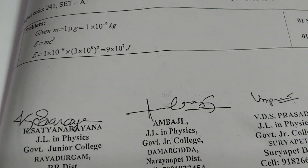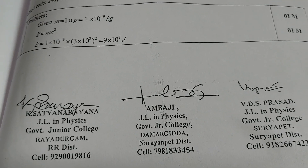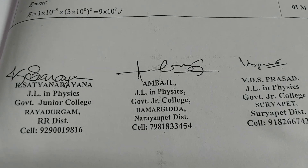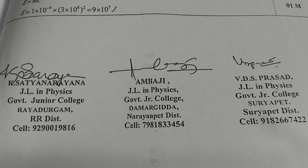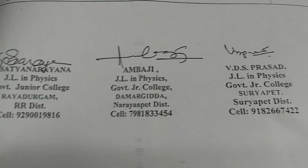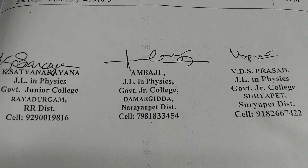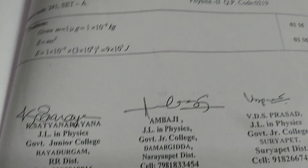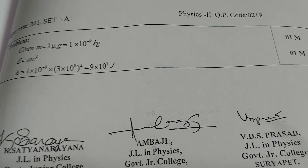This is the key provided by TSBIE for the second year physics scheme of evaluation. This key has been prepared by experts: Sachinarayana — JLN Physics, Government Junior College, Raya Durgam; Ambaji — JLN Physics, Government Junior College, Damargidda; and VDS Prasad — JLN Physics, Government Junior College, Suryapet. Their phone numbers are also mentioned — you can call them if you have any doubts. Hope this video is very useful to you. Thanks for watching. See you soon — take care, bye.